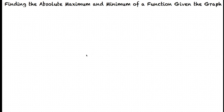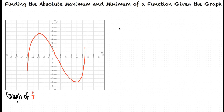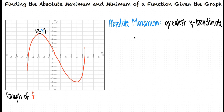This video will cover the topic of finding the absolute maximum and minimum of a function given the graph. In these problems we will want to look for the highest and lowest point on the graph. The absolute maximum of f is the greatest y-coordinate of any point on the graph f, and the absolute minimum of f is the least y-coordinate of any point on the graph f.